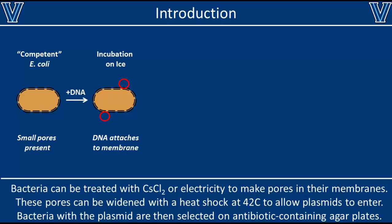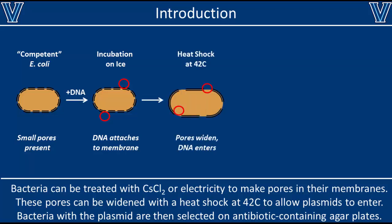Once you have your competent bacteria, all you need to do is add the DNA and incubate the sample on ice. During this step, plasmid DNA attaches to the cell surface but it's still too large to get through the small pores. To help the plasmid DNA get through the pores, we heat shock the cells at 42 degrees Celsius. This sudden increase in temperature widens all of the pores and allows the plasmid DNA to enter the cell.